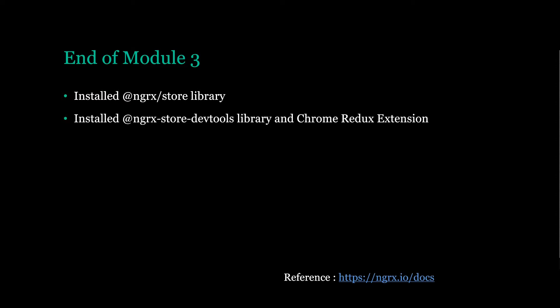We are at the end of module 3. In this module we were basically doing a lot of the basics — we brought in a bunch of libraries that we'll need and created some actions, reducers, selectors, and effects. At the end of this module you should have the NgRx store library installed, which gives you the ability to create actions, reducers, and selectors. You should also have the NgRx store dev tools installed, along with a Chrome extension for viewing our state and checking out all our different dispatched actions.